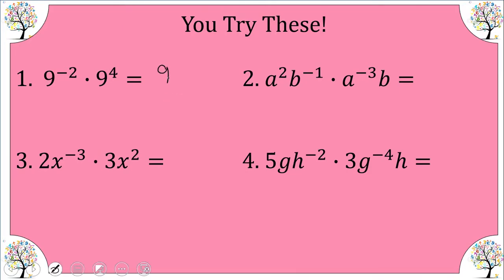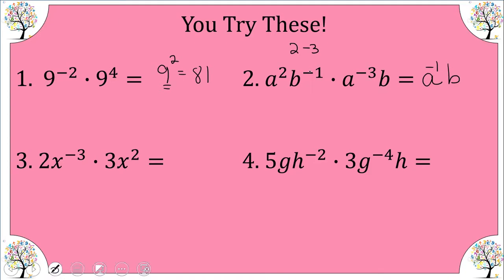We have nine to the power of two — I'll evaluate that since it's simple, so we get 81. If you left it as nine squared, that's fine because we're just simplifying here, not evaluating. Next, we have a factor of a squared times a to the negative three, and b to the negative one times b to the one. For the base a: two plus negative three gives negative one. For base b: negative one plus one gives zero. We can't leave a negative exponent, so we reciprocate it. B to the zero equals one. Our final answer is one over a.